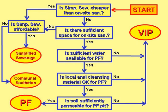The first question in the algorithm is: is simplified sewerage cheaper than on-site sanitation? If it is, we ask: is it affordable? And if it is, then we choose simplified sewerage. If it's not affordable — and therefore the more expensive on-site sanitation systems are also unaffordable — then the only peri-urban option is communal sanitation, for example community-managed toilet and laundry blocks.